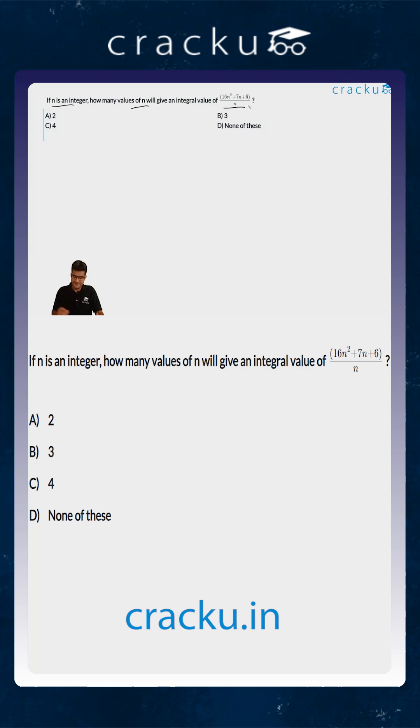If you are simplifying the given expression, it is 16n plus 7 plus 6 by n. You want this to be an integer.